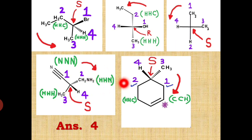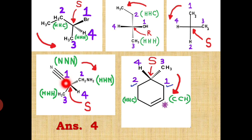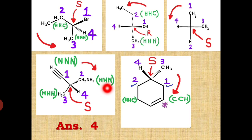For the fourth molecule, the primary atoms are carbon, carbon, carbon, and hydrogen. Hydrogen has the least atomic number, so it gets priority four. Among the three carbons, we examine secondary atoms: one carbon is attached to three nitrogens, one carbon is attached to two hydrogens and one nitrogen, and one carbon is attached to three hydrogens. Nitrogen has higher priority, so the carbon with three nitrogens gets first priority, the one with two hydrogens and one nitrogen gets second, and the one with three hydrogens gets third. From 1 to 2 to 3 is clockwise, but the fourth priority group is on the wedge bond — so we change the configuration from R to S.